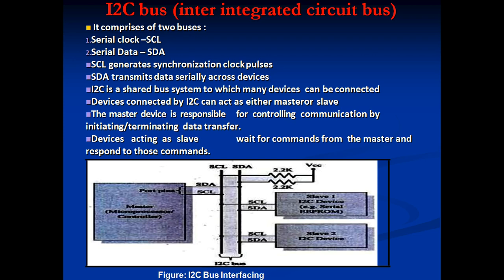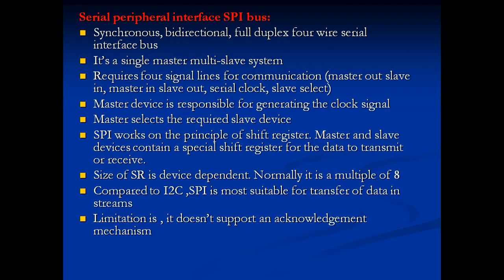In the I2C diagram, a master microcontroller generates clocks and transmits data serially to different slave devices, which are connected through pull-up resistors to VCC. Devices connected via I2C can act as either master or slave. The master initiates and terminates data transfers; slaves wait for and respond to master commands.